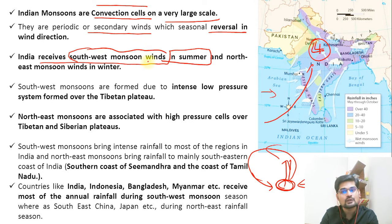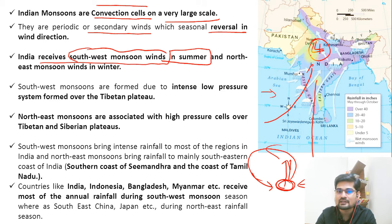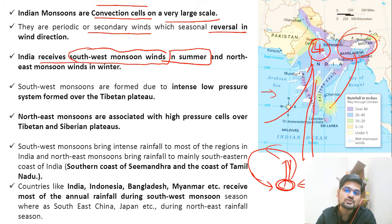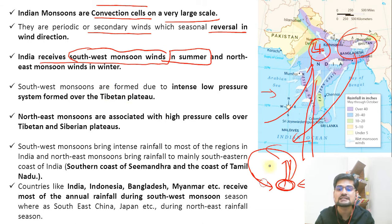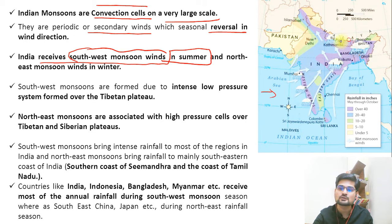In winters, the sun moves back toward the Tropic of Capricorn. Pressure starts shifting southward again, and wind begins blowing from the land to the oceans — that is what we call the winter monsoon. Apart from these basic concepts of summer and winter monsoon, the Southwest monsoons occur basically because of an intense low-pressure system formed over the Tibetan Plateau.